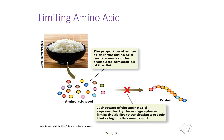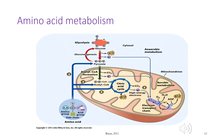A limiting amino acid is the essential amino acid available in the lowest concentration relative to the body's needs. The carbon components can be used in one of three ways: gluconeogenesis, which is the production of carbohydrates from non-carbohydrate sources; ATP production via the citric acid cycle; or lipogenesis for storage.